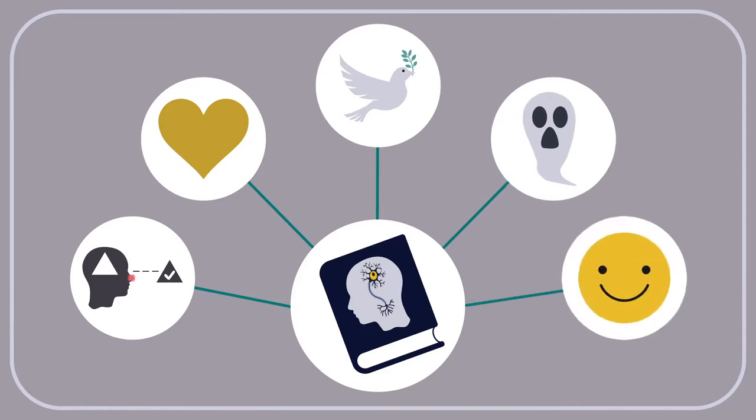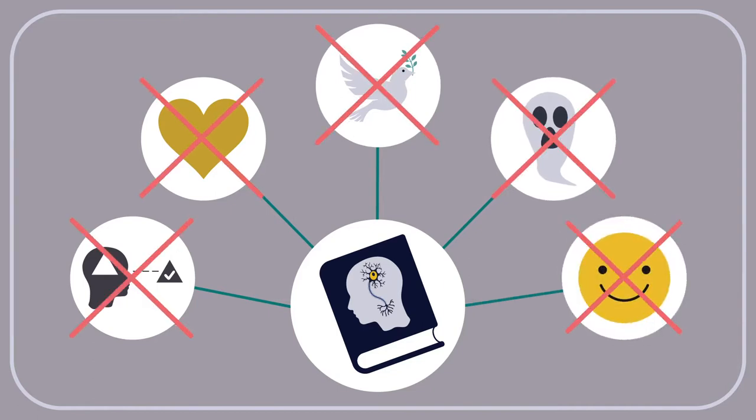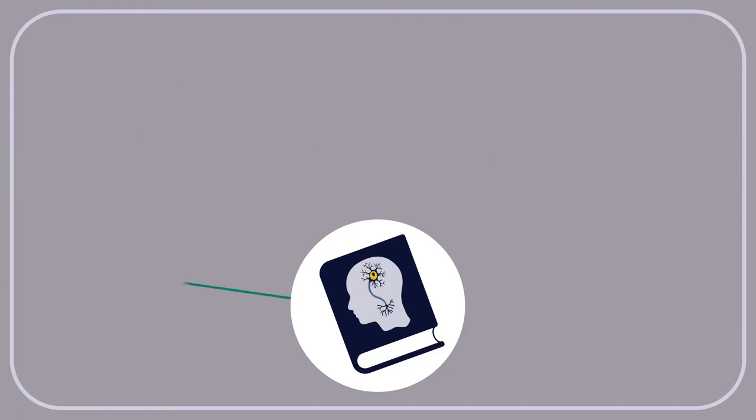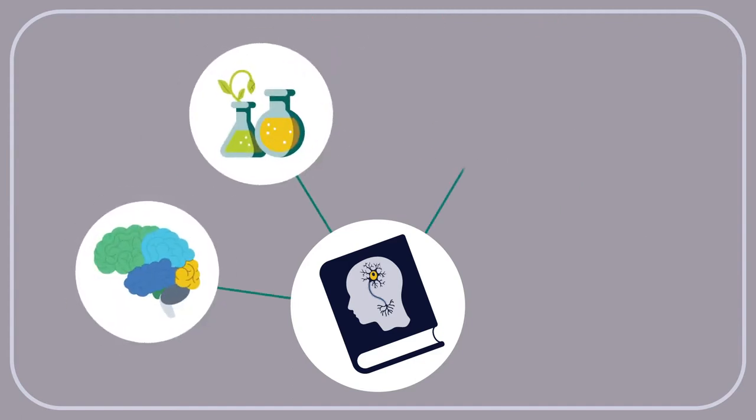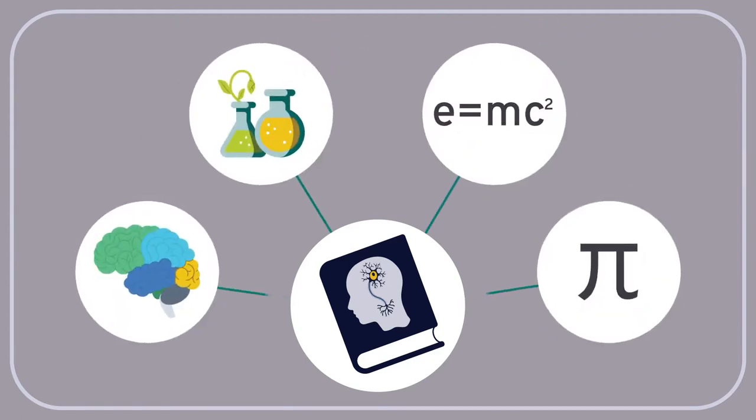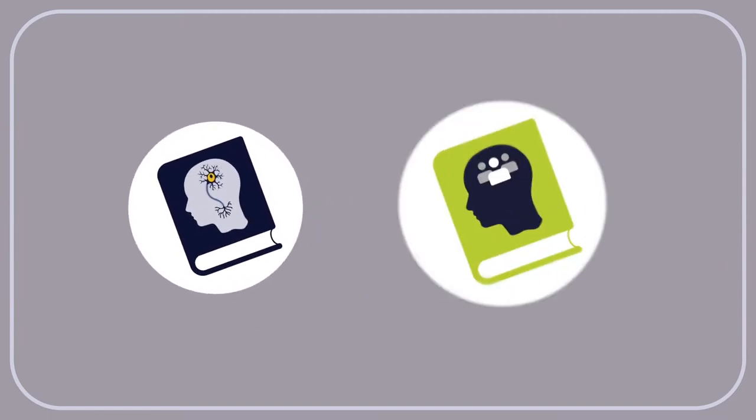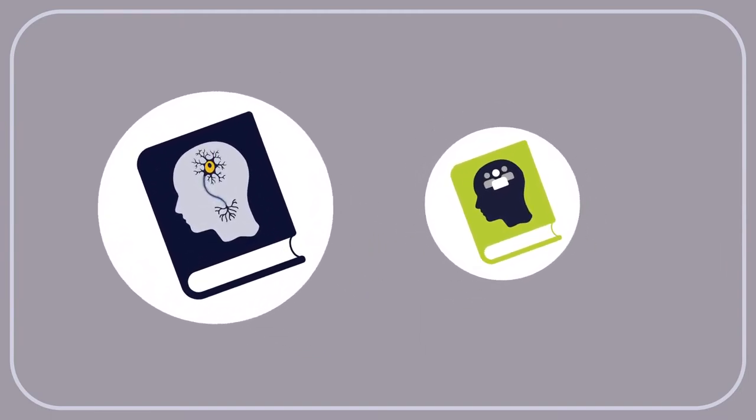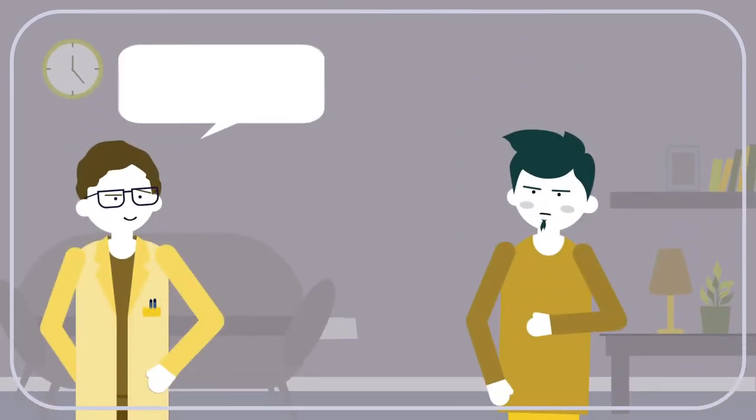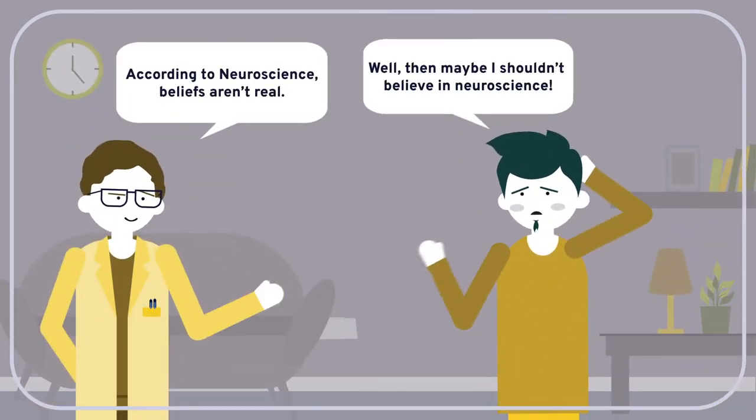And unlike folk psychology, neuroscience doesn't posit the existence of beliefs, desires, or any other ordinary mental state. It deals in brains, chemistry, physics, and mathematics. If neuroscience gives us a better theory for understanding human behavior than folk psychology does, would we still have any reason to believe in beliefs? What do you think?